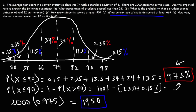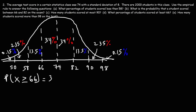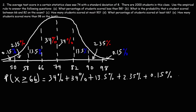Part D: what percentage of students scored at least 66? We add everything to the right of 66: 34% plus 34% plus 13.5% plus 2.35% plus 0.15%, which gives 84%.